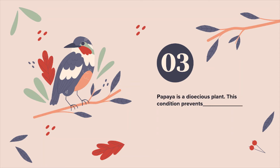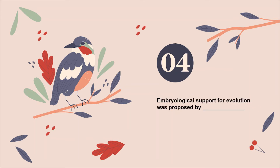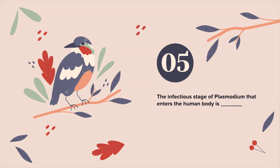Third question: papaya is a dioecious plant. This condition prevents ___. Fourth: embryological support for evolution was proposed by ___. Fifth: the infectious stage of plasmodium that enters the human body is ___.